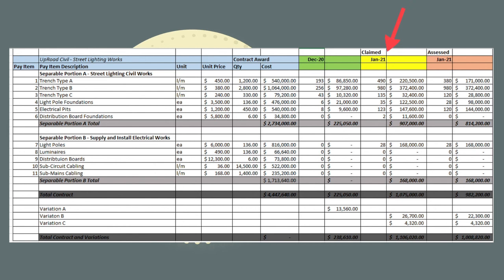Their total claim comes out at $1,106,020. Under the orange heading, we have our assessment of this claim. As the head contractor, we need to assess this claim for what we believe it is worth. While Uprod Civil are claiming for 490 metres of trench type A, we believe they have only completed 380 metres. Similarly, they are claiming for two distribution board foundations and we believe they haven't completed any — most likely because although they have substantially completed the works, there are outstanding defects or works to finish before we can pay them. We've also assessed the valuation of their variations differently. In summary, our assessment of their payment claim comes out as $1,008,820.